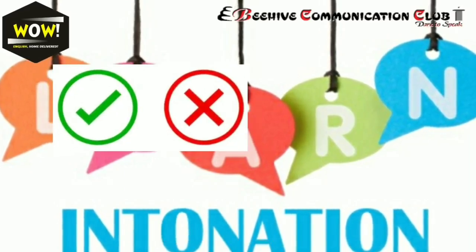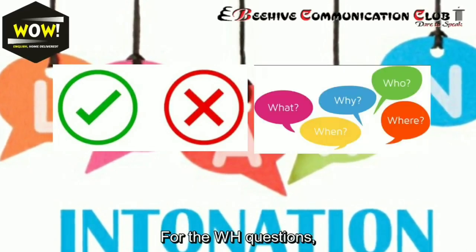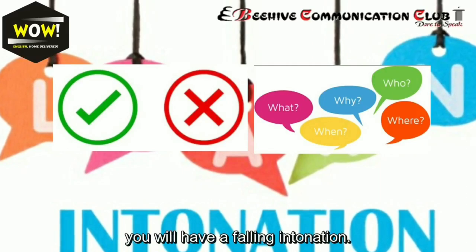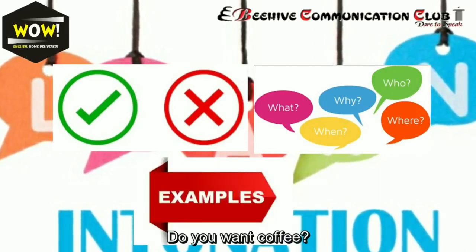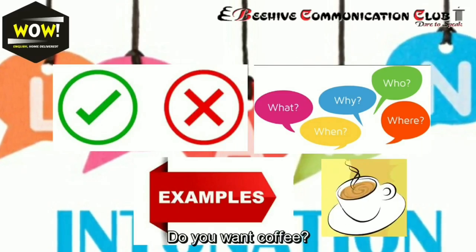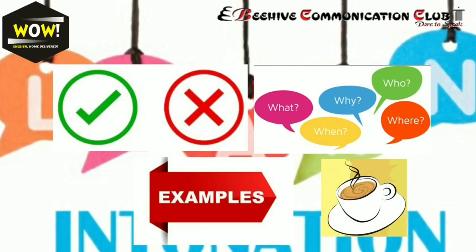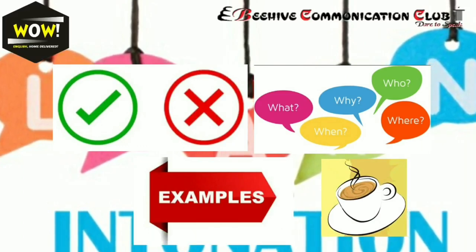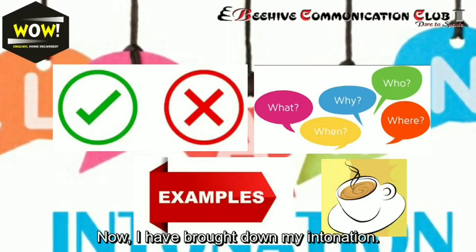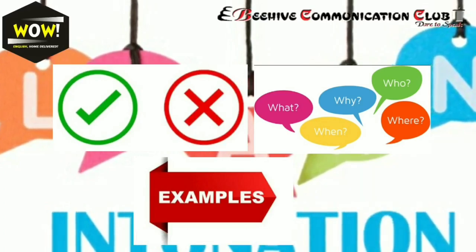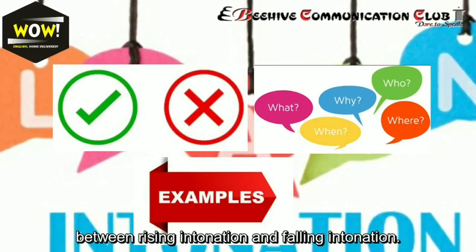For yes-or-no questions you will have a rising intonation. For WH questions you will have a falling intonation. For example: 'Do you want coffee?' — I have raised my intonation. 'Why do you want coffee?' — I have brought down my intonation. This is the difference between rising and falling intonation.